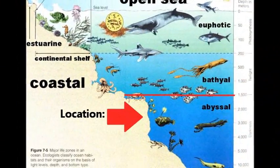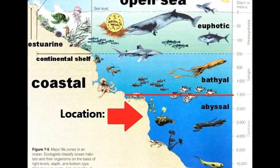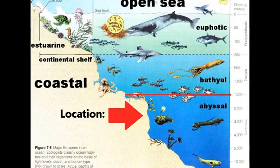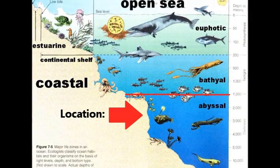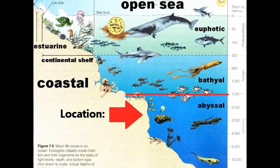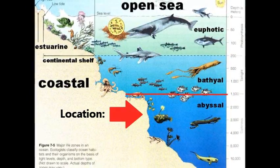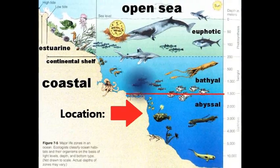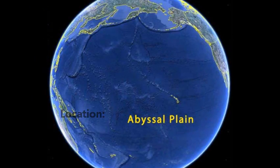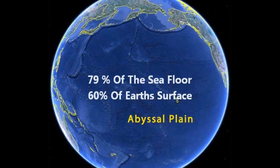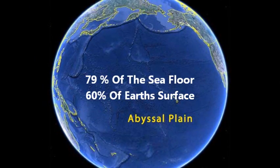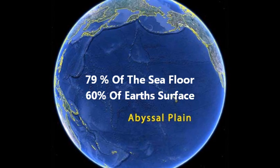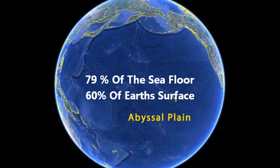The location of the Abyssal Plains is at depths between 3,000 and 6,000 meters, which is 10,000 to 20,000 feet. It lies generally between the foot of the continental rise and the mid-ocean ridge. The physical description is that it lies about two miles deep and it is most common in the Atlantic Ocean.